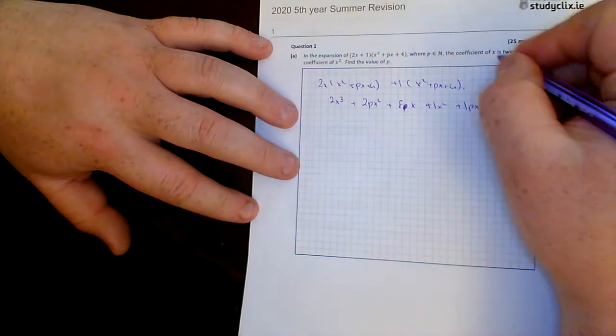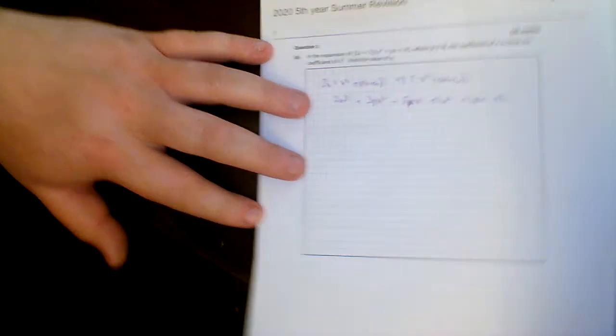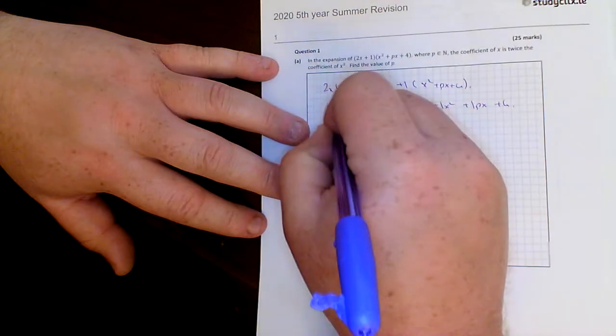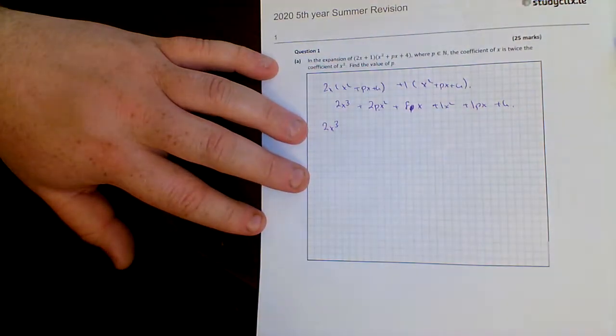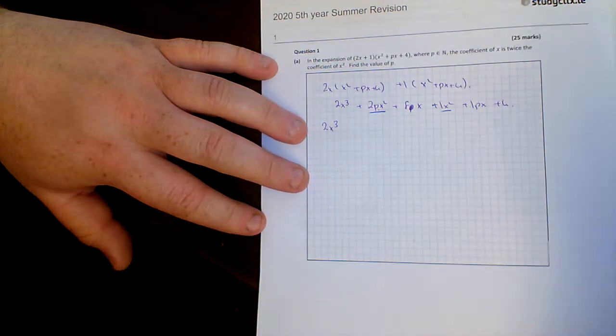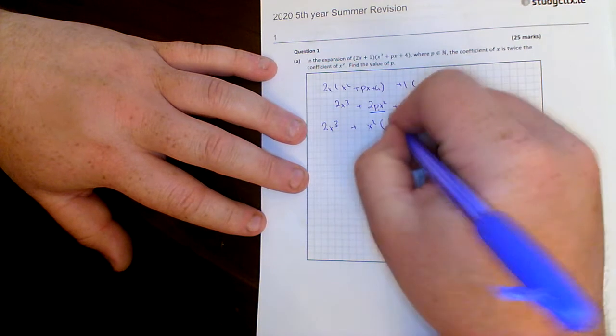Okay, tidy it up and I'll go back to the question again. The coefficient of the x and the coefficient of the x squared. So try and get the x squared and the x's together. 2x cubed is out on its own. That's an x squared term. And that's an x squared term. Bring the two of them together by factorizing. Taking out the highest common factor. x squared outside the brackets is 2p plus 1.